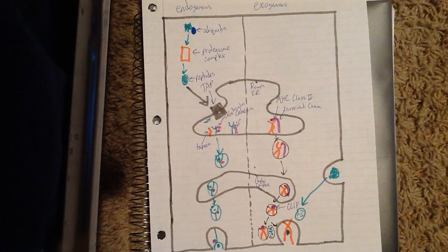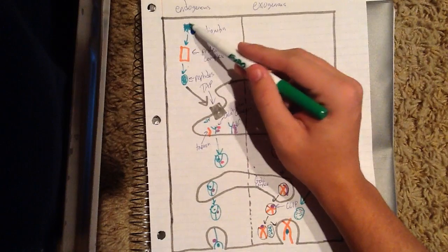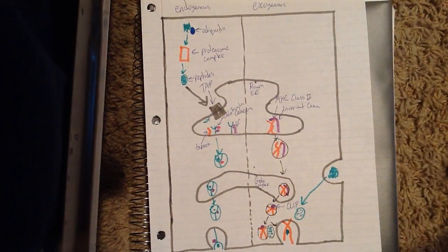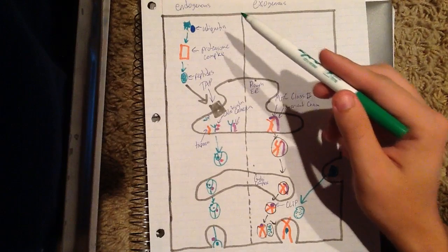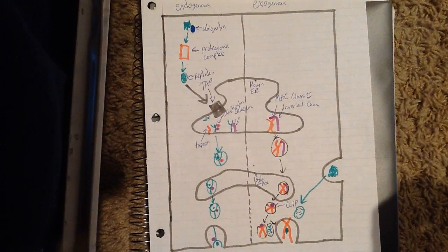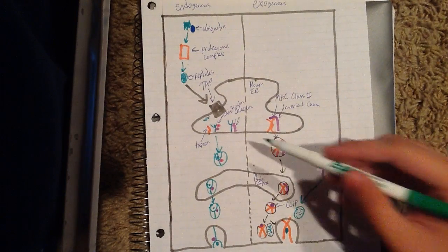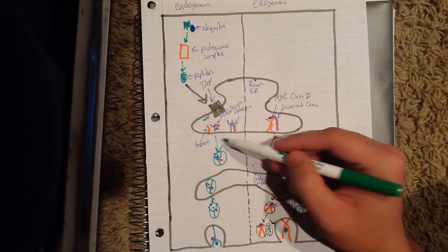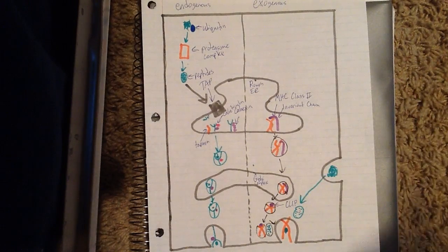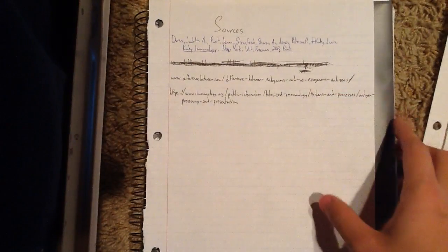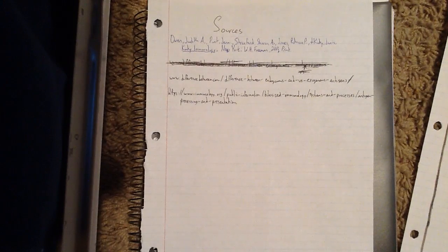To summarize the main differences: exogenous antigens are foreign compounds from outside the body, whereas endogenous antigens are compounds generated inside the body. Exogenous antigens are actively taken up by antigen-presenting cells, whereas endogenous antigens are already present inside the cytoplasm. Most importantly, endogenous antigens are recognized in association with MHC class 1 molecules, while exogenous antigens are recognized by MHC class 2 molecules.